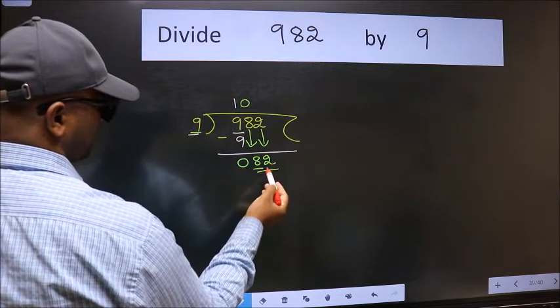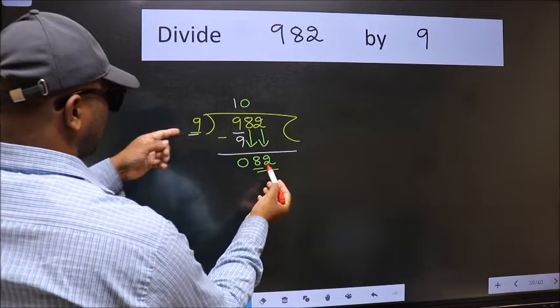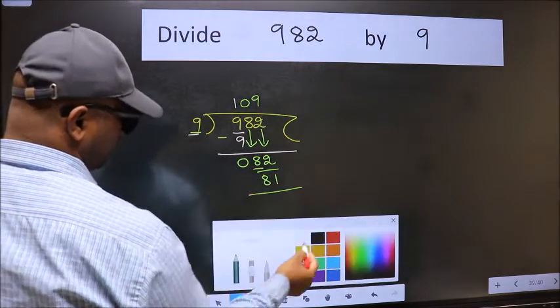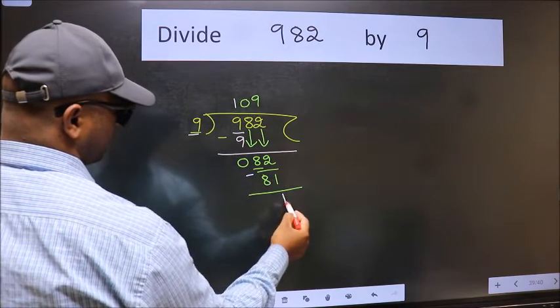Now 82. A number close to 82 in 9 table is 9 nines 81. Now we should subtract. We get 1.